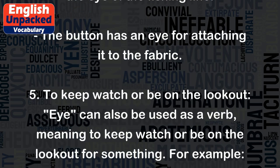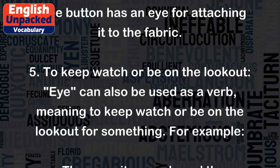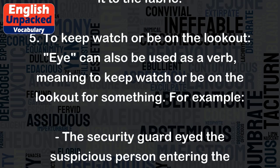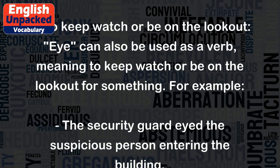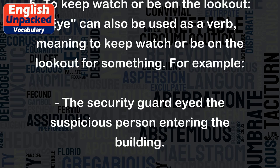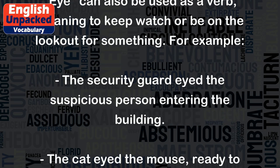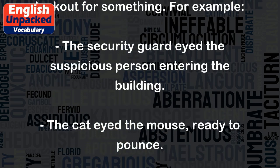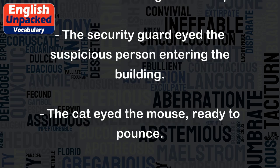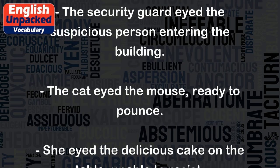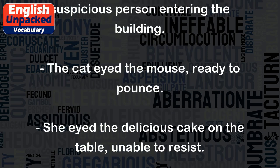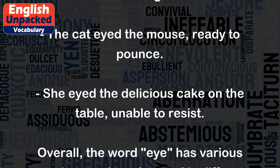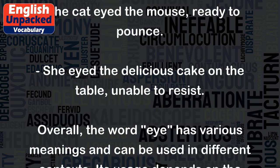5. To Keep Watch or Be on the Lookout. Eye can also be used as a verb, meaning to keep watch or be on the lookout for something. For example, the security guard eyed the suspicious person entering the building. The cat eyed the mouse, ready to pounce. She eyed the delicious cake on the table, unable to resist.